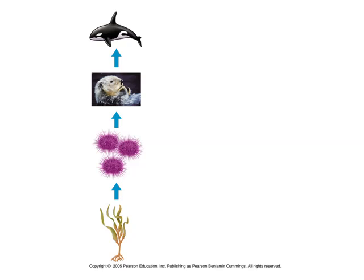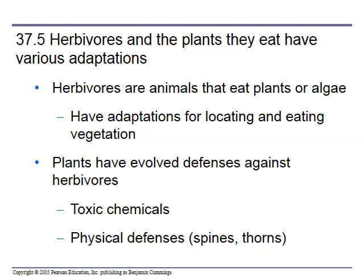Herbivores and the plants they eat have various adaptations. Herbivores are animals that eat plants or algae, and they have adaptations for locating and eating vegetation — like giraffes, which are grazers with long necks adapted to eat out of trees. Plants evolve defenses against herbivores because they can't run away, so they'll produce toxic chemicals — poisons — or they'll have physical defenses like spines and thorns.